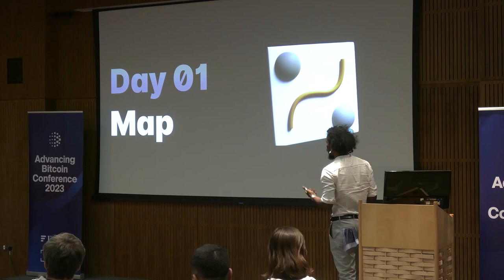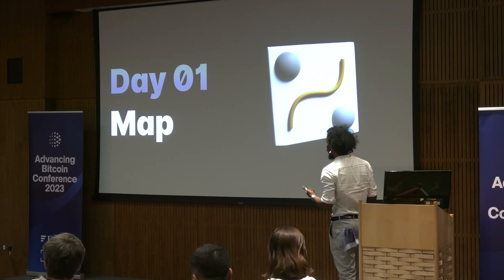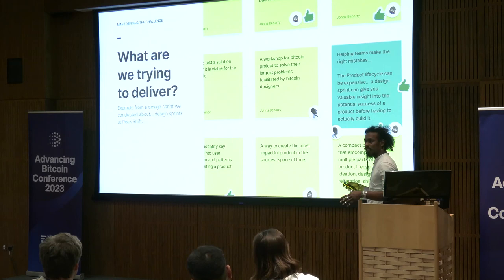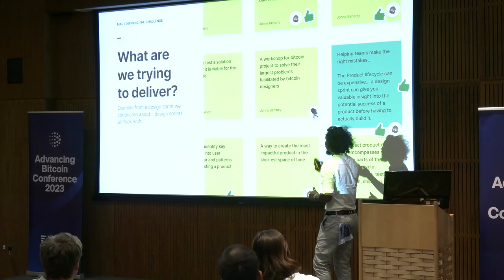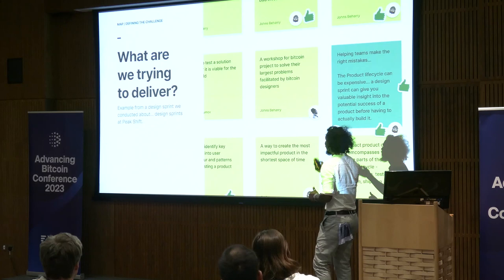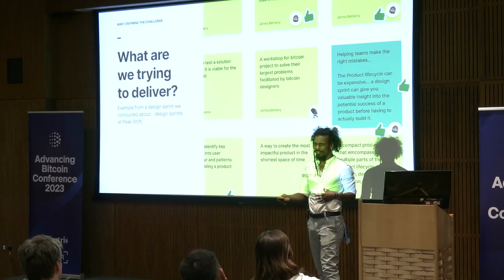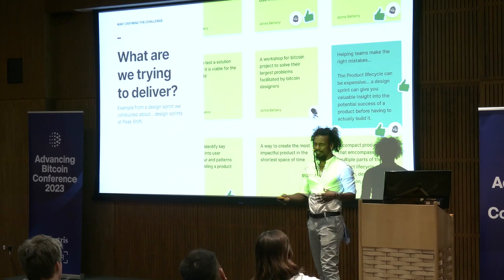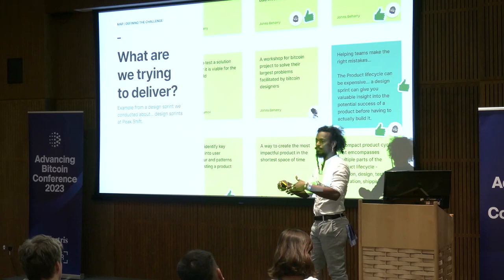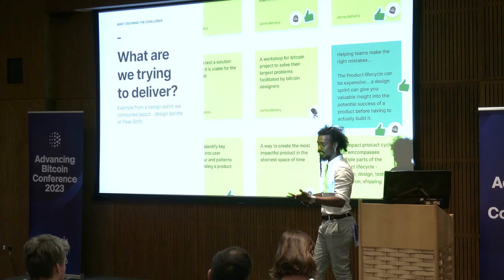Starting with day one — the mapping exercise. There are a lot of sticky notes being done. It could happen completely remotely. The first question is: what is it that we're trying to deliver? What is the product? What is the feature? This is a design sprint we did about design sprints. There's voting — everyone gets on a call, it's very interactive, and they're laying out their ideas of what they're trying to deliver. We use a voting mechanism to come to a quick decision.